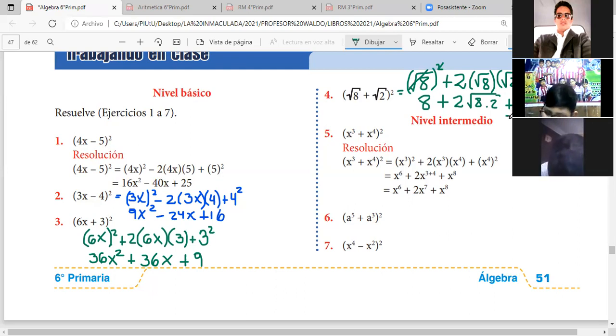Reduciendo esto, voy a tener 8 más... el 2 quedó afuera, 8 por 2 es 16, la raíz de 16 todos sabemos que es 4, entonces será 2 por 4 más 2. Ahora tenemos acá 8 más 2 por 4 que es 8, más 2. 8 más 8, 16, más 2, 18. Ese será el resultado en el número 4.